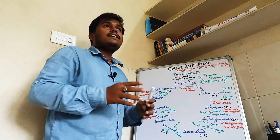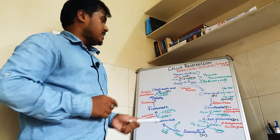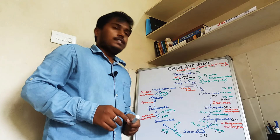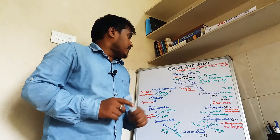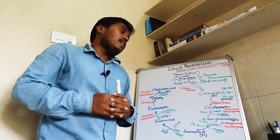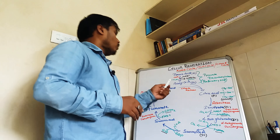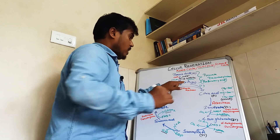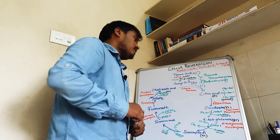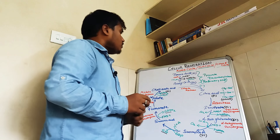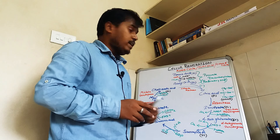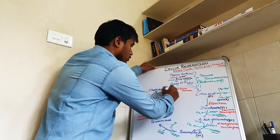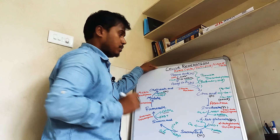The Krebs cycle is also known as the TCA cycle or citric acid cycle. TCA stands for tri-carboxylic acid, because citric acid has three carboxylic groups. The first compound formed in the Krebs cycle is citric acid, which is why it is called the TCA or citric acid cycle. The cycle starts from acetyl CoA, which converts into citric acid in the presence of citrate synthase.